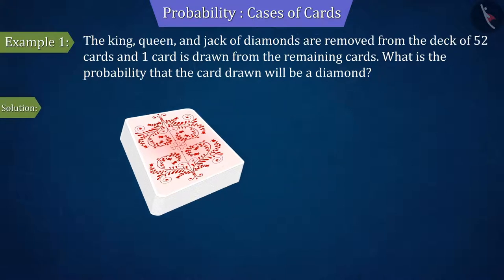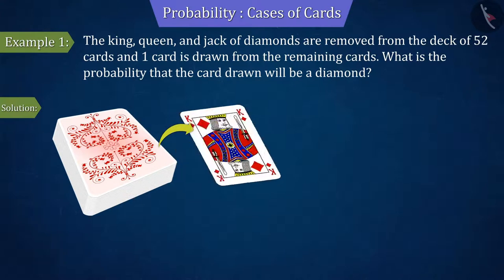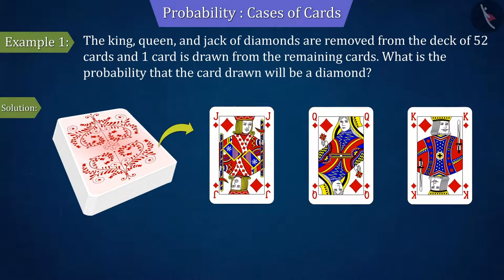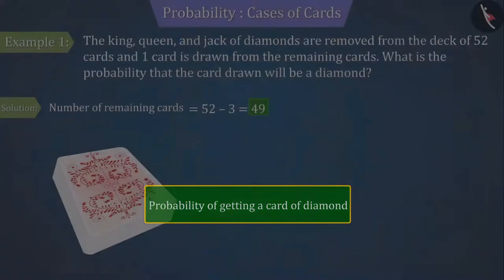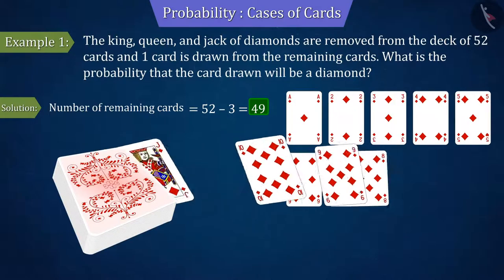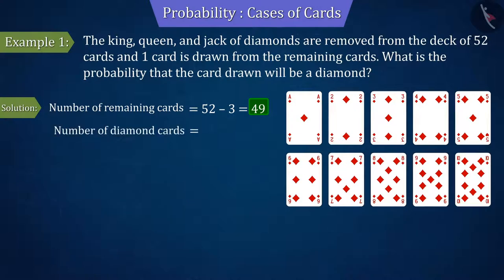From the given information, if the three cards of king, queen and jack of diamonds are removed, then the number of cards left in the deck is 49. Since we have to find the probability of getting a card of diamonds, we know that by removing three diamond cards, the number of remaining diamond cards in the deck is 10.